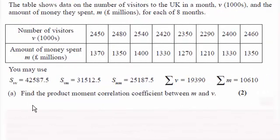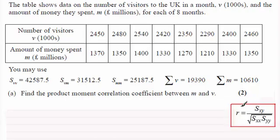Hi there. For this part of the question we're asked to find the product moment correlation coefficient between the variables m and v represented in this table. In order to do this, what you've got to remember — and you'll generally find this in your formula book — is that the product moment correlation coefficient r is equal to SXY all divided by the square root of SXX times SYY.